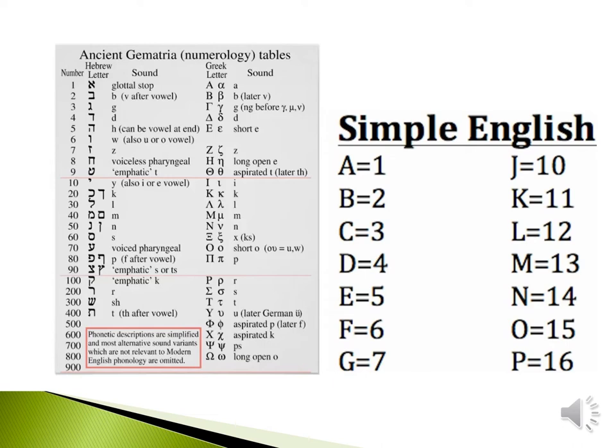This is Hebrew Gematria, assigning numeral values to a Hebrew alphabet. And this is Greek Gematria, alphabetical — each letter represents a number. This is English Gematria shown here as well.